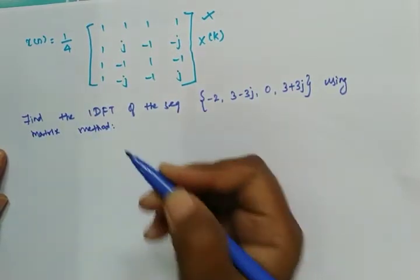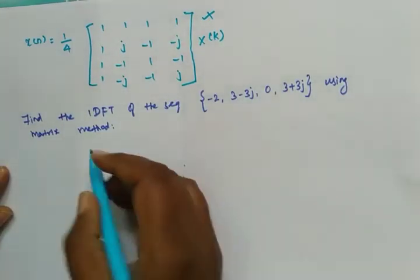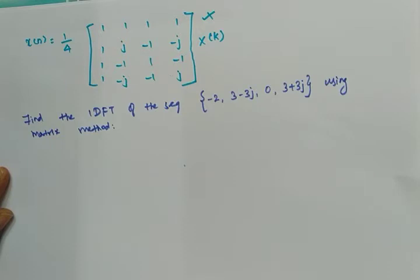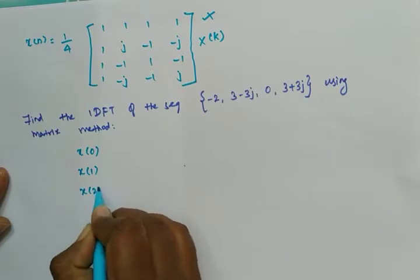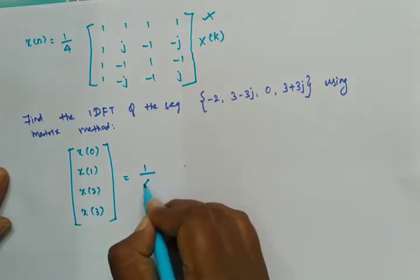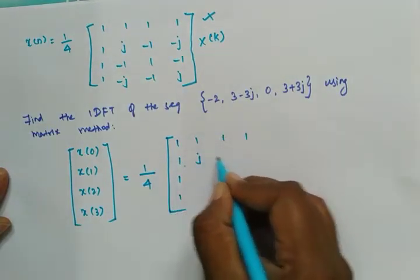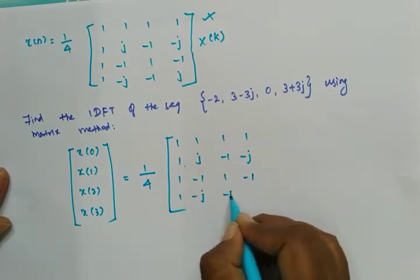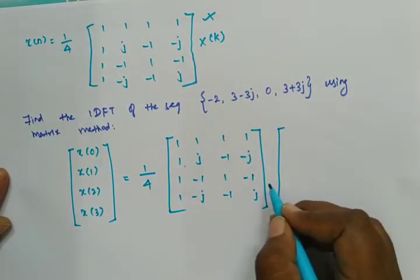This is straightforward when compared to direct formulation. We write x(0), x(1), x(2), x(3) in matrix form, equal to 1/4 times the conjugated matrix [1 1 1 1; 1 j −1 −j; 1 −1 1 −1; 1 −j −1 j] multiplied by the sequence [−2, 3−3j, 0, 3+3j].